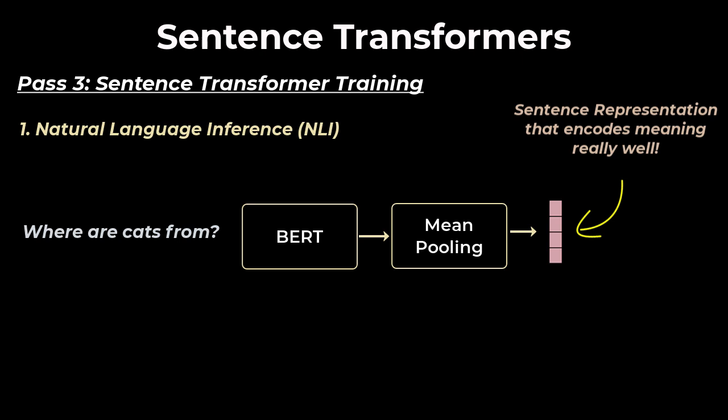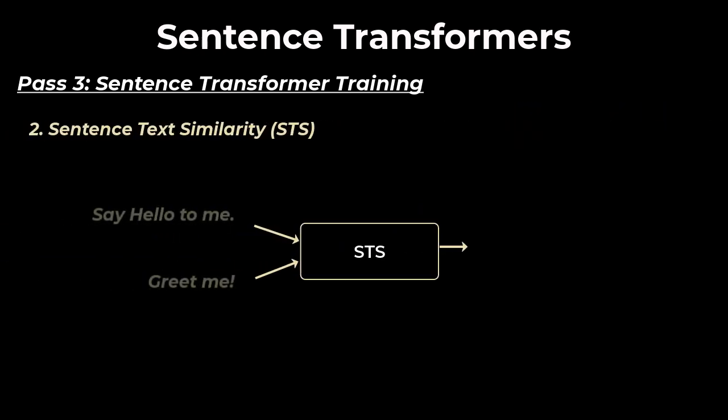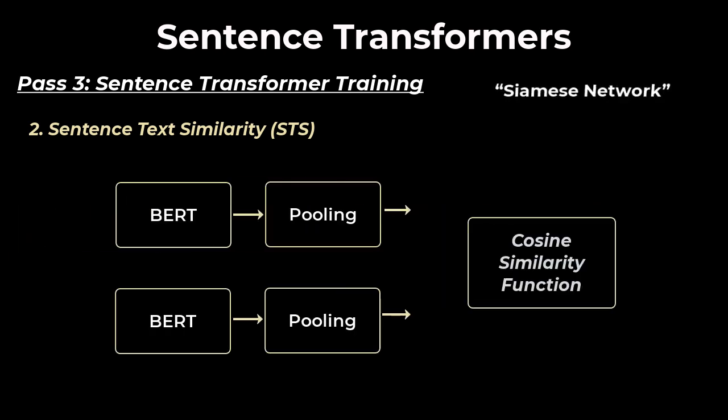This natural inference task isn't the only way though that we can train sentence transformers. Another task we can use to fine-tune BERT to understand sentences is using sentence text similarity. Given two sentences, output the rating of how similar they are. So just like natural language inference, this is also trained with a Siamese network.